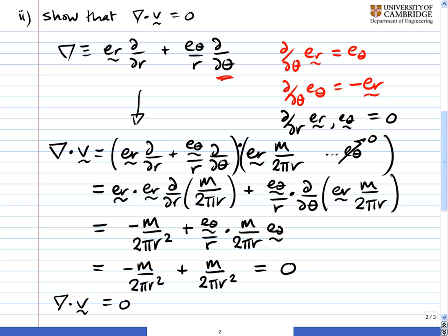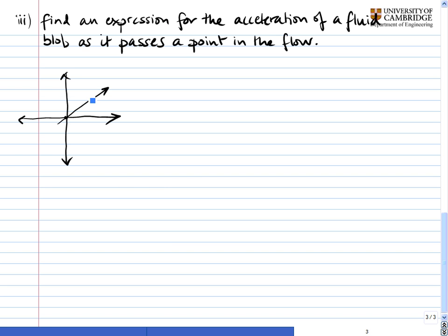In other words, if it's an incompressible flow, it satisfies conservation of mass. Now, in the next part, we have to find an expression for the acceleration of a fluid blob as it passes a point in the flow. So let's take this point here and imagine we've got this sort of blob of fluid floating past.